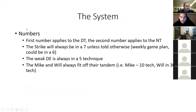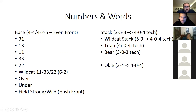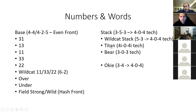So what do these numbers mean? The first number applies to the defensive tackle and the second to the nose tackle — those are the techniques they line up in. If I call 31, the tackle goes to three-technique and the nose to one-technique. If I call 13 it's reversed. 11 means both are in one-technique — that's inside shade of the guard. 33 means both are in three-techniques. 22 means both are head-up in two-techniques, which means we're usually stunting or slamming.